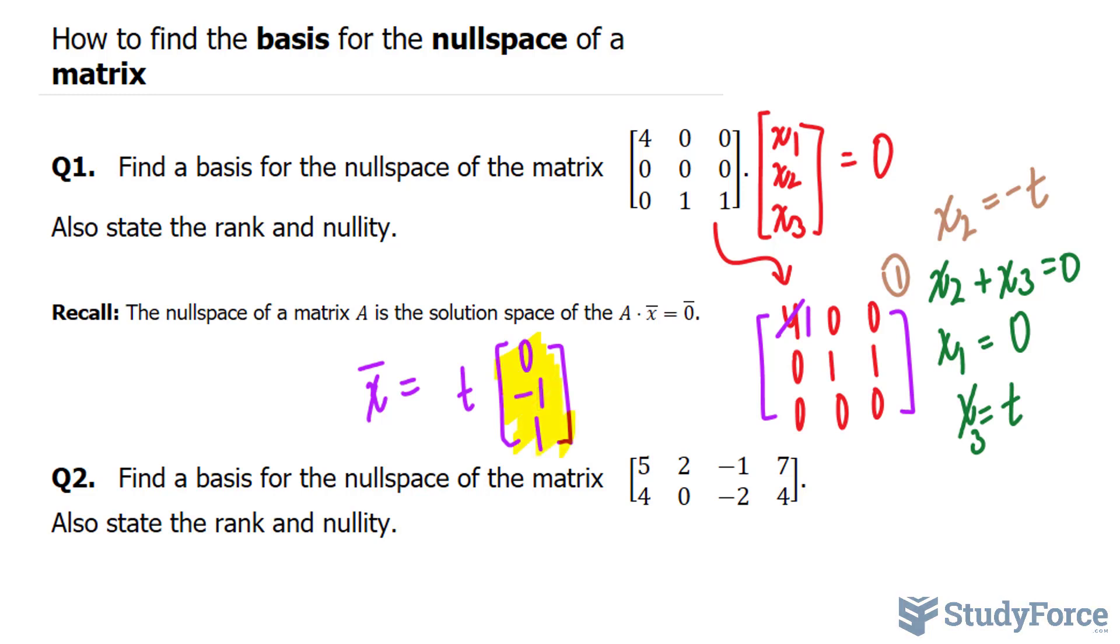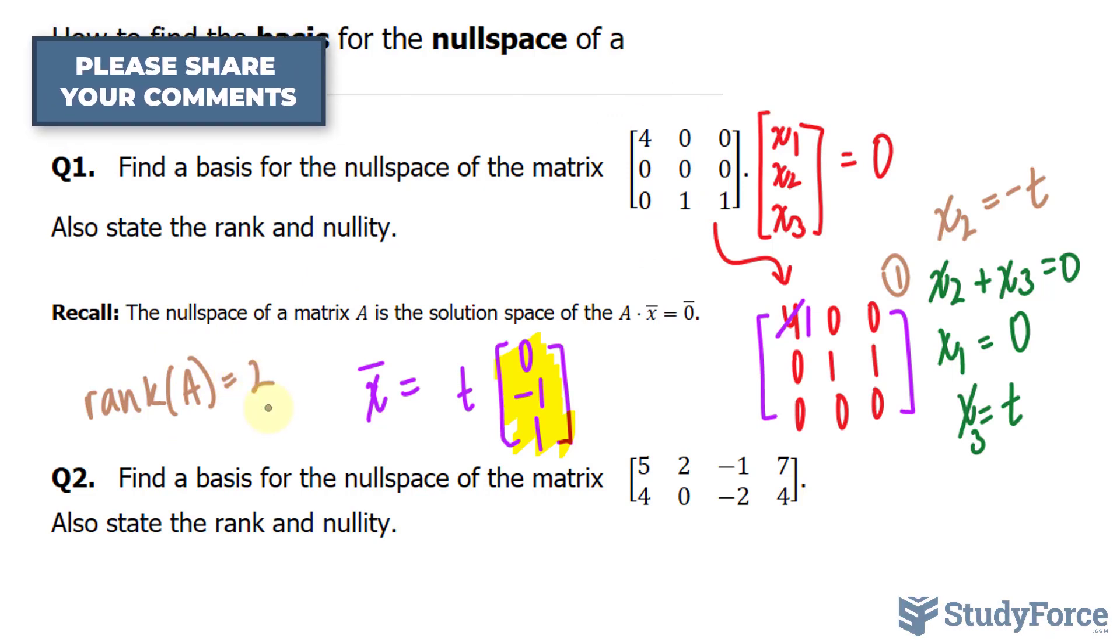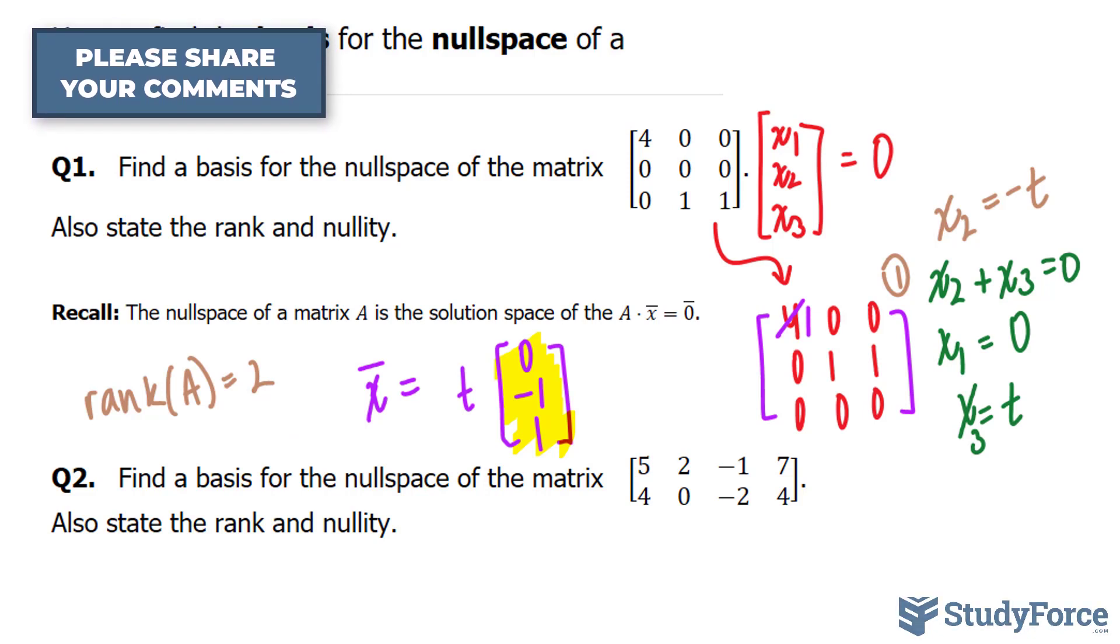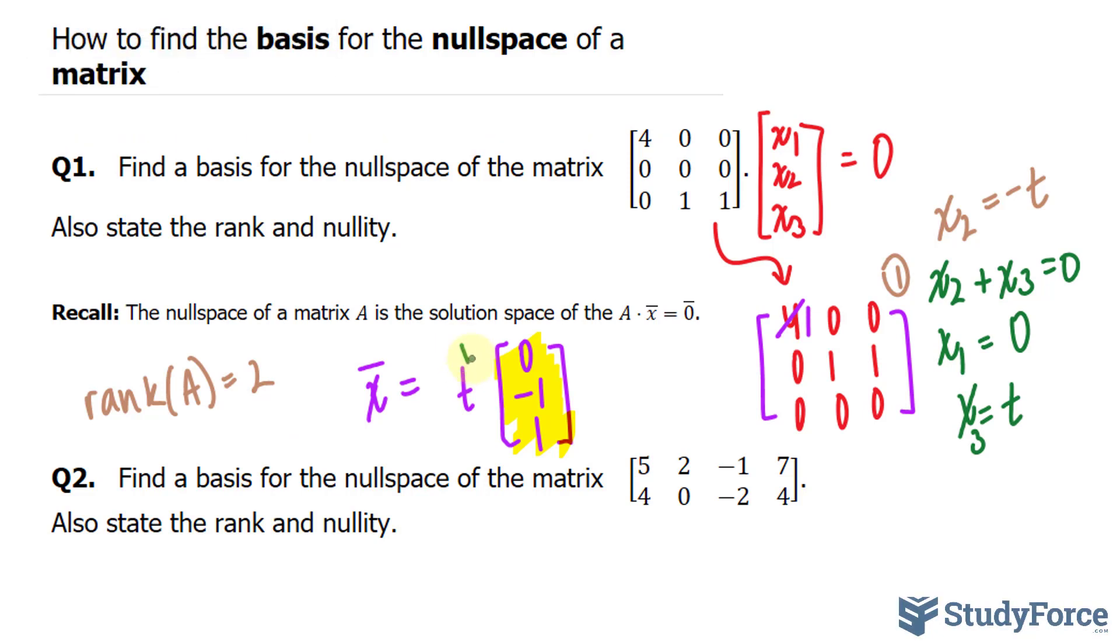Now we didn't discuss what rank and nullity are, so let's discuss those right now. The rank is the number of leading ones, and in this particular case we had two leading ones. So the rank of, let's call this matrix A, is equal to two. The nullity is the number of parameters. When you don't have a leading one representing a variable, you refer to it as a parameter. So this is our parameter, and the nullity of A is one.